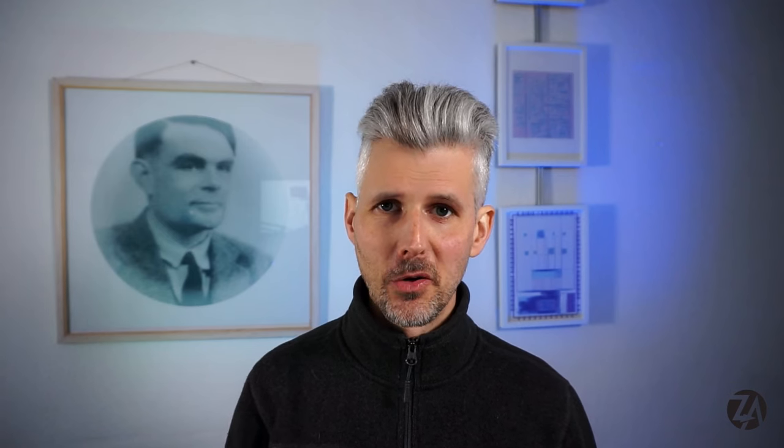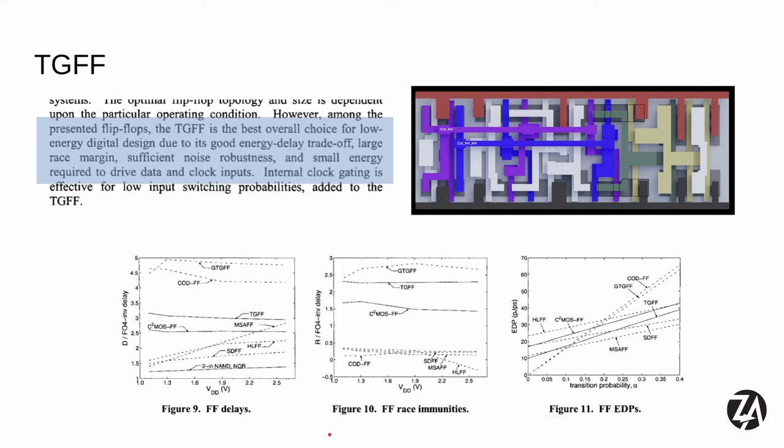You probably saw the MPW1 fail video, so you already know the answer: it's to do with clock skew. We were assuming both flip-flops had exactly the same clock, but if the two flip-flops receive different clocks, all our plans go out the window and data can end up changing within either the setup or hold window. The problem with MPW1 was that the clock tree was synthesized badly, and we had so much skew across the chip that we ended up with hold violations.